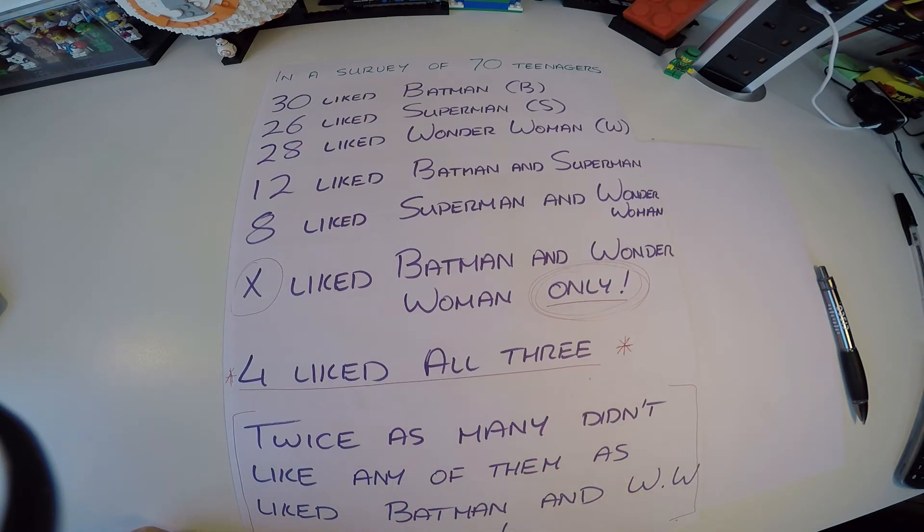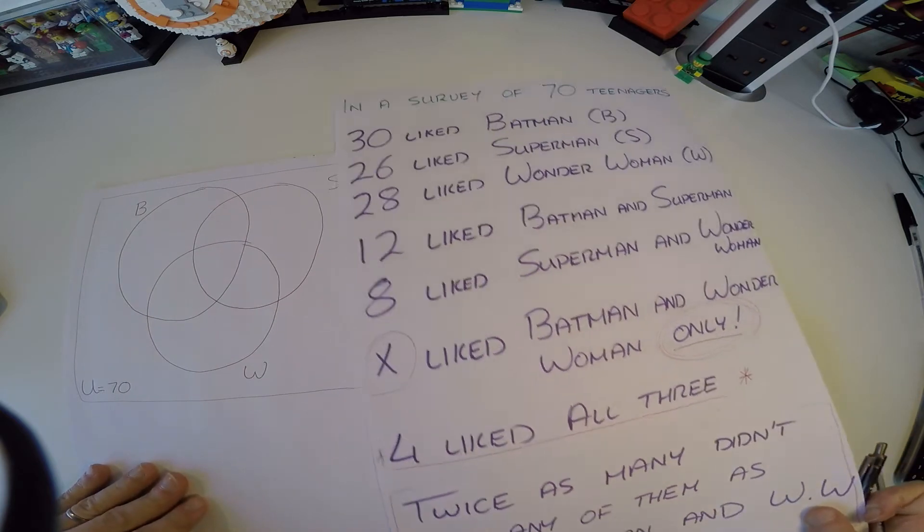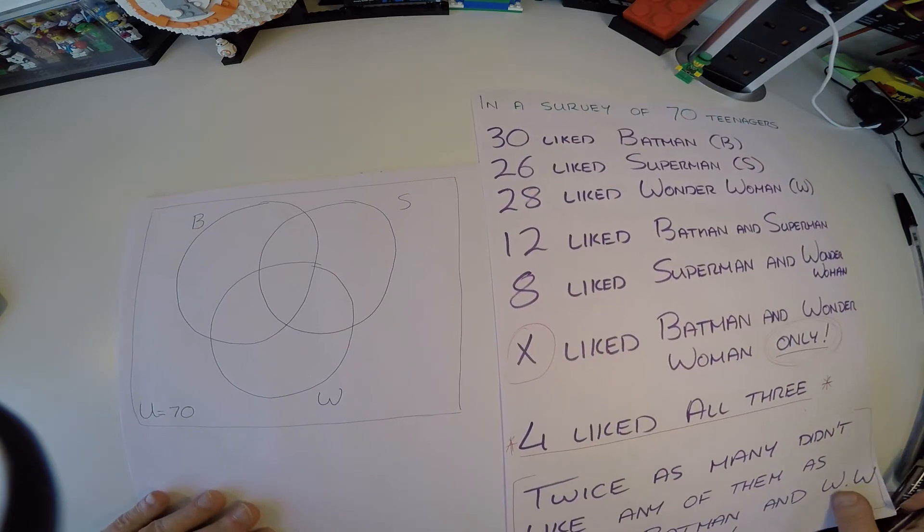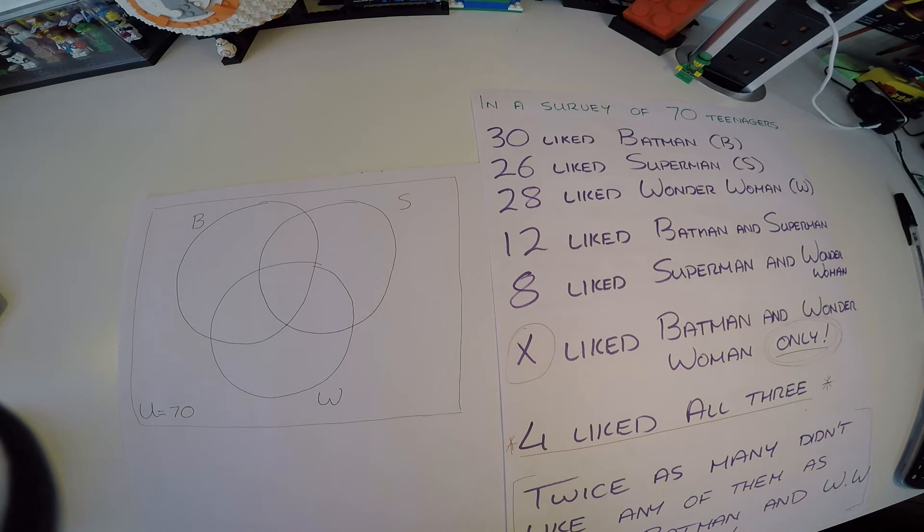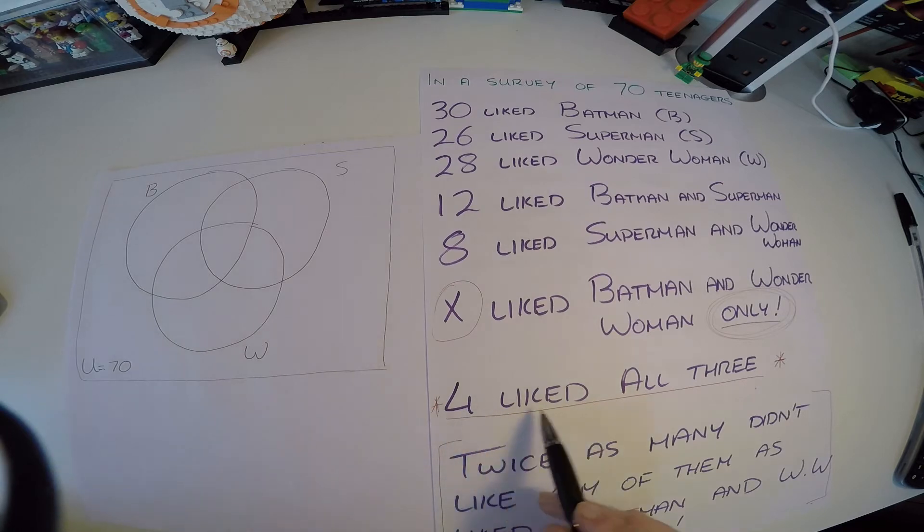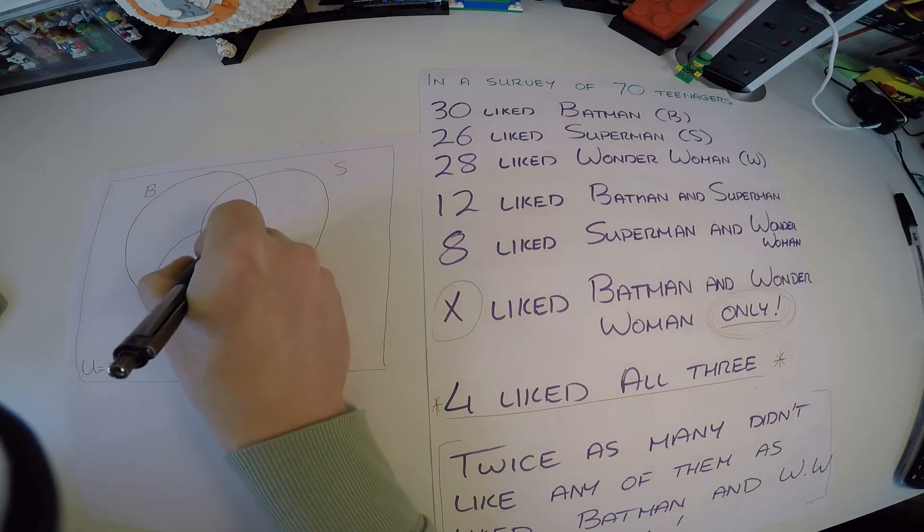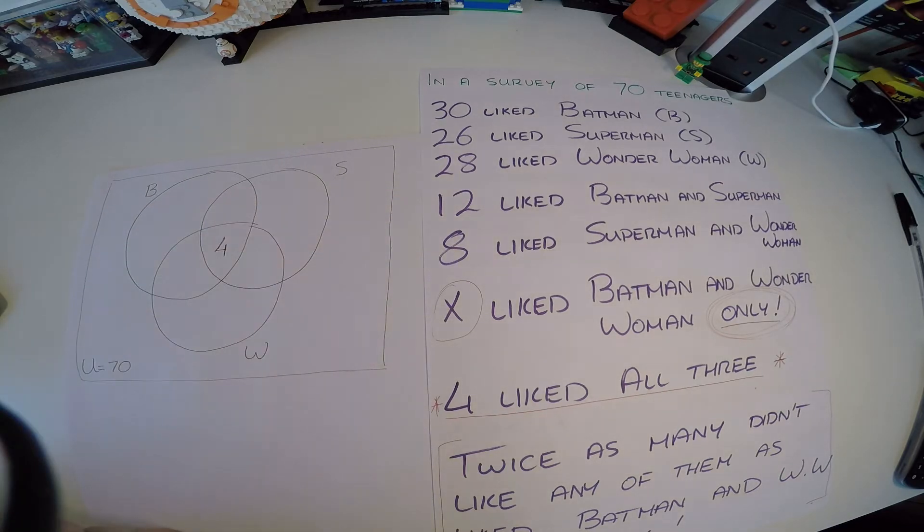But now this is the trickiest part: twice as many didn't like any of them as like Batman and Wonder Woman only, which is the unknown quantity. Okay, so let's move this aside and I drew a small Venn diagram for you. Let's look here. Okay, so we have a Venn diagram here. How can we fill this out? Well, the first one we would always go to is the all three, so we can definitely fill in this middle section here and say 4, 4 definitely liked all three.